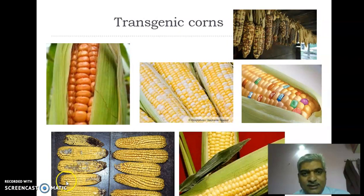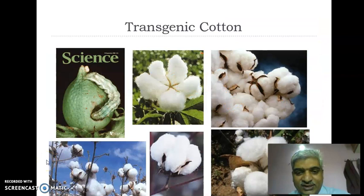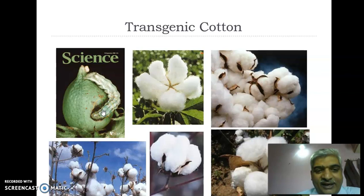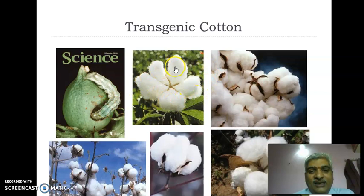Here is a representative picture of transgenic cotton, which clearly depicts the advantage of transgenic plants over conventional plants. Many insects infect the cotton plant at a very early stage, thereby reducing productivity. With advances in transgenic cotton, the plants are able to develop toxins against insects, and thereby the productivity of cotton is improved through transgenic technology.